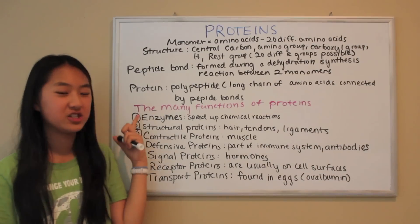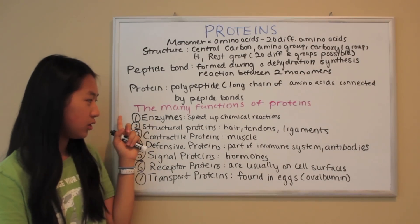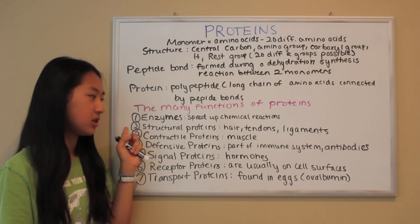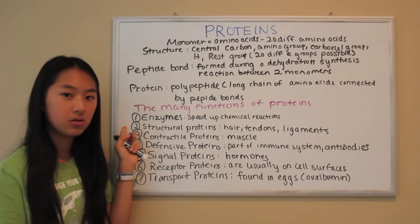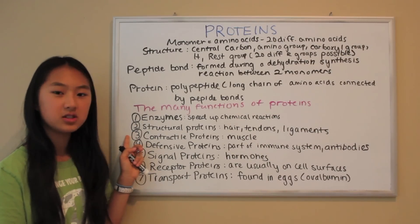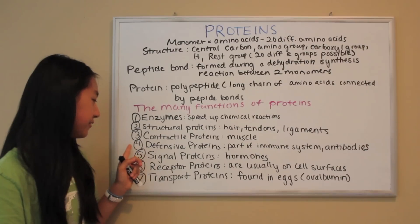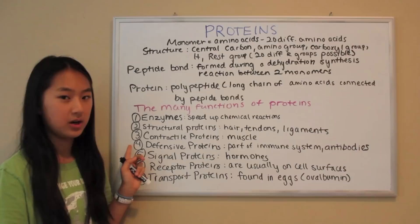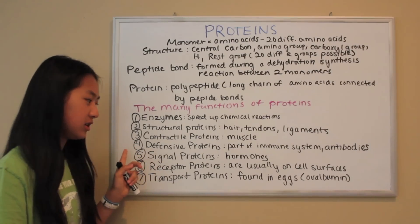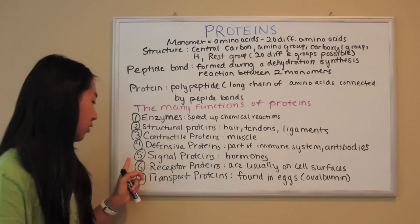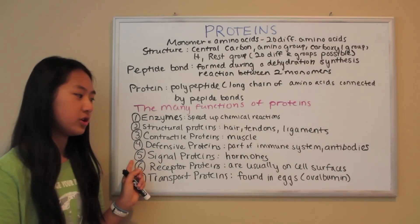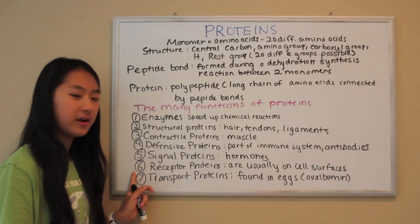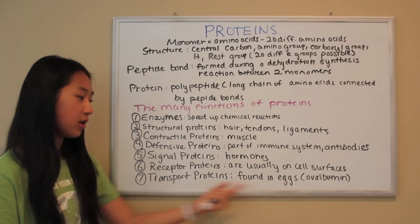There are many functions of proteins. They can be enzymes which speed up chemical reactions; structural proteins such as hair, tendons, or ligaments; contractile proteins such as muscle; defensive proteins which are part of the immune system or antibodies; signal proteins such as hormones; receptor proteins which are usually found on cell surfaces; and transport proteins which are found in eggs like ovalbumin.